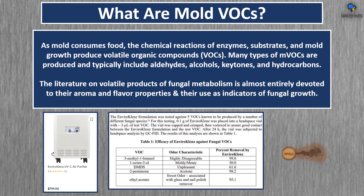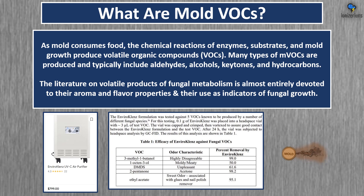As mold consumes food, the chemical reactions of enzymes, substrates, and mold growth produce volatile organic compounds. Many types of mold VOCs are produced and typically include aldehydes, alcohols, ketones, and hydrocarbons. An $800 HEPA purifier with UVC does a horrible job of removing mold VOCs over a 24-hour period — this is why we use ionizers instead.